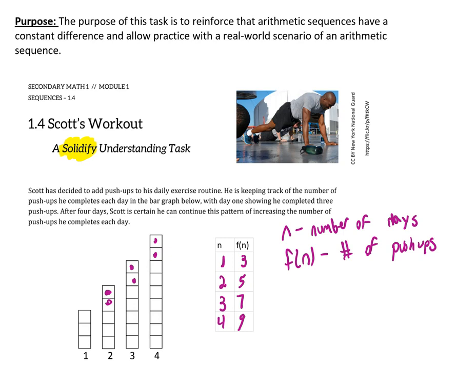This is an arithmetic sequence because it is growing by a constant difference. Meaning every time as I go from one number to the next in the sequence, I'm adding a constant amount, which in this case is two.